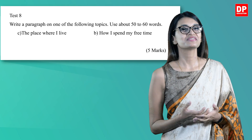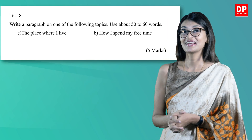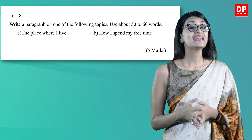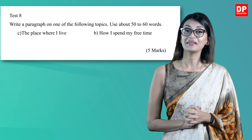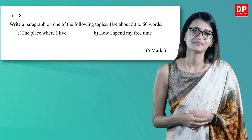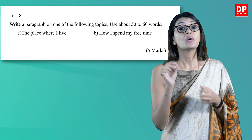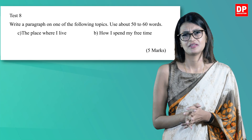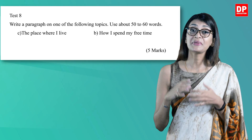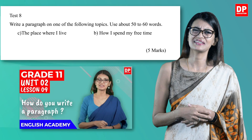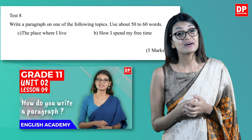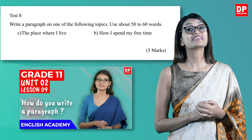Now let's look at test 8. You are asked to write a paragraph on one of the following topics, using about 50 to 60 words. A: The place where I live. B: How I spend my free time. You have to choose one of the two, but I thought I would write short paragraphs on both. You may want to use the PEEL format, or watch lesson 9 to get a better idea on how to write a paragraph. Remember, this question too carries five marks.